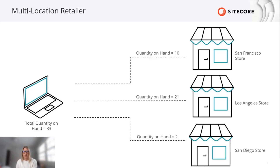A multi-location retailer scenario is set up very similarly to our last one. Here you can see retail stores represent the fulfillment locations. This only shows three, but imagine having tens or hundreds of locations, each with their own inventory for this laptop. The setup allows for buy online, pickup in-store checkout options. The buyer can see which stores have inventory for the product they want, and then they can choose the product and pickup location in checkout. Behind the scenes, the buyer is setting where the item will ship from prior to submitting their order.